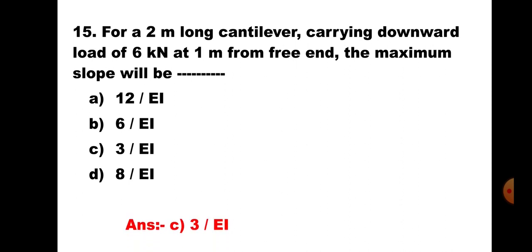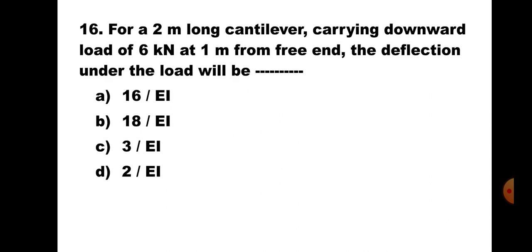Question number 16. For a 2m long cantilever carrying a downward load of 6kN at 1m from the free end, the deflection under the load will be: A. 16/EI, B. 18/EI, C. 3/EI, D. 2/EI. The cantilever and loading are the same as the previous case. The deflection under the load is WL₁³/3EI, which comes out to be 2/EI. Hence, the correct answer is D. 2/EI.